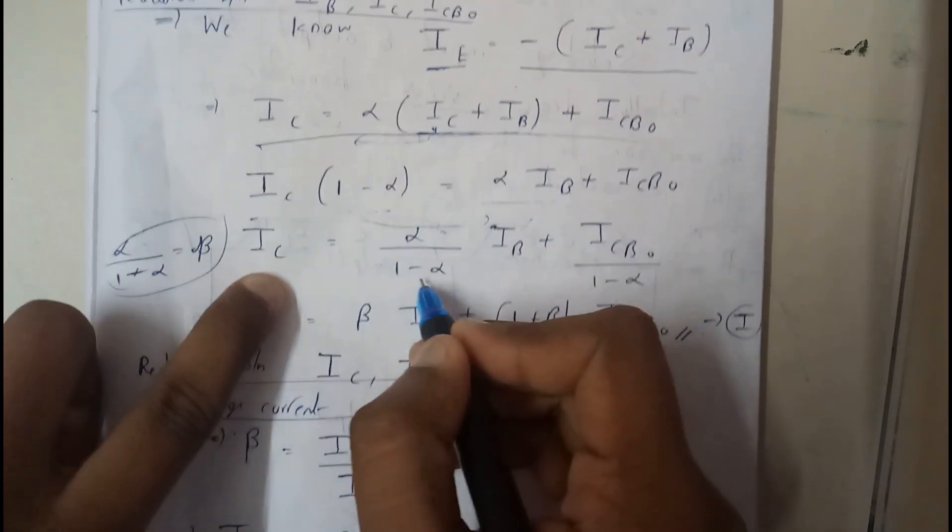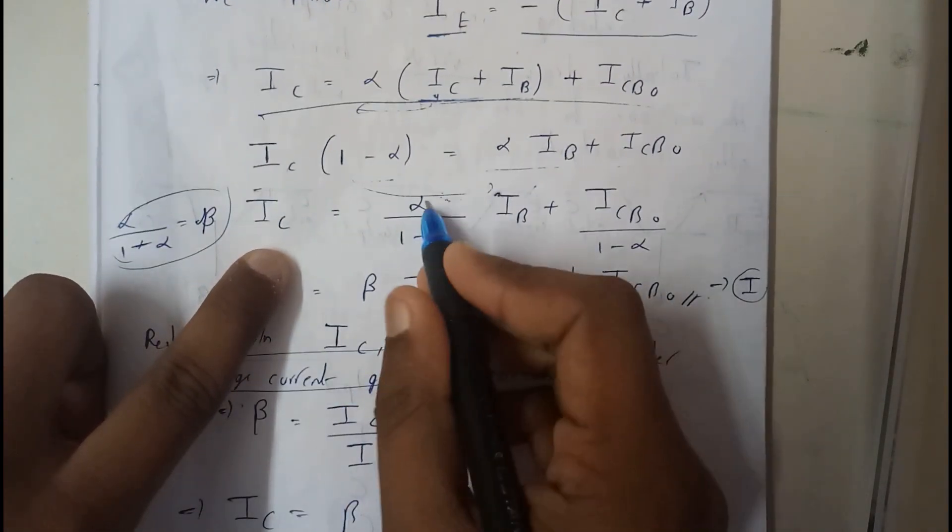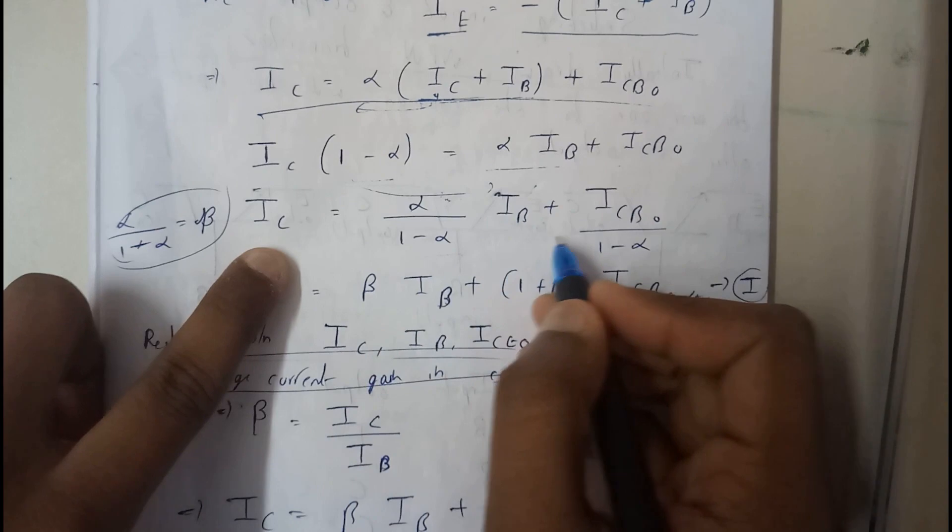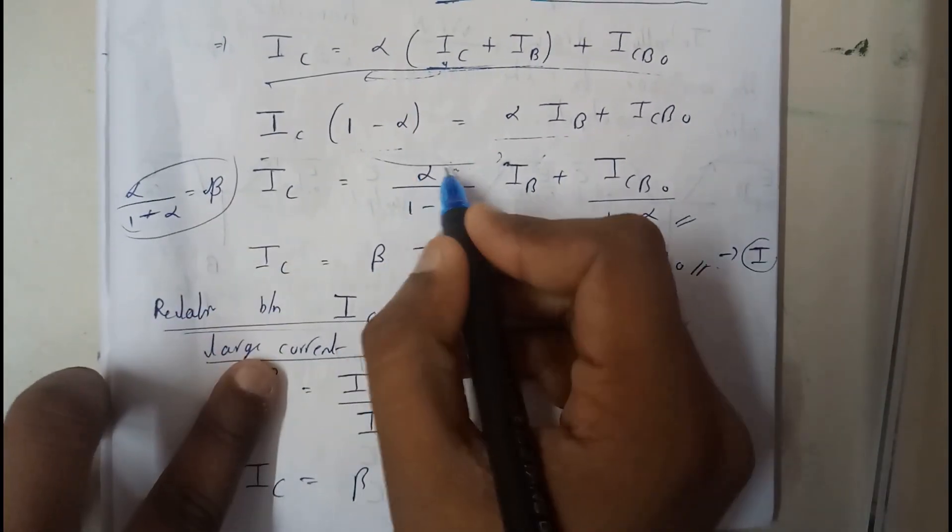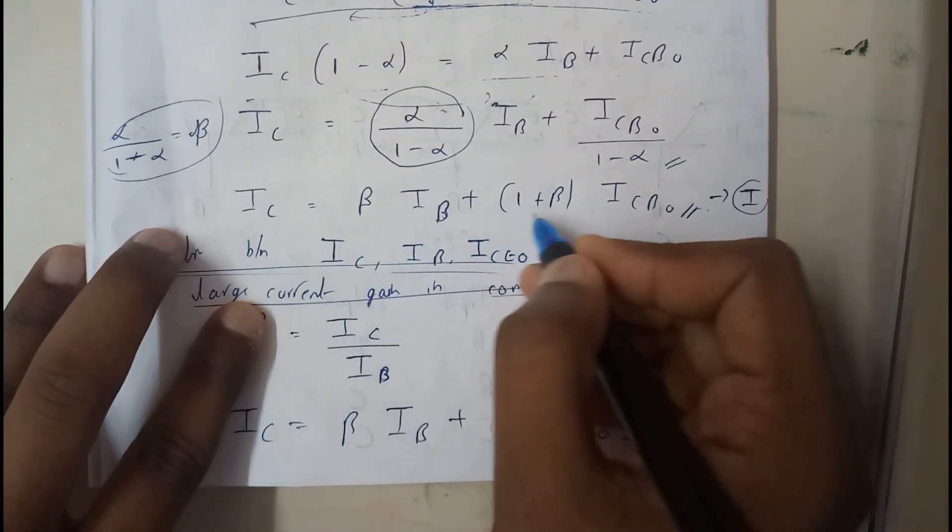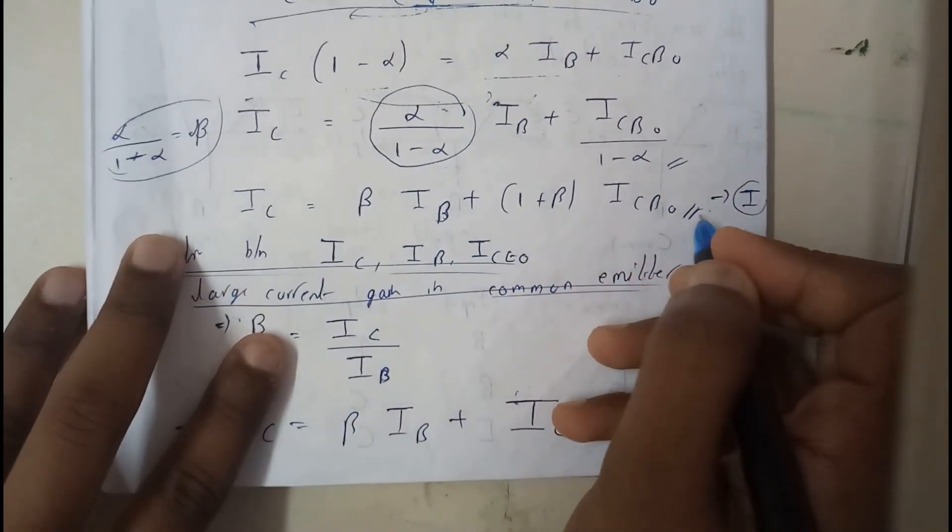Now I will be dividing on that side with alpha IB, so alpha by 1 minus alpha. We got this equation. Basically I will be assuming this whole part as beta, so IC is equal to beta IB plus 1 plus beta ICBO.